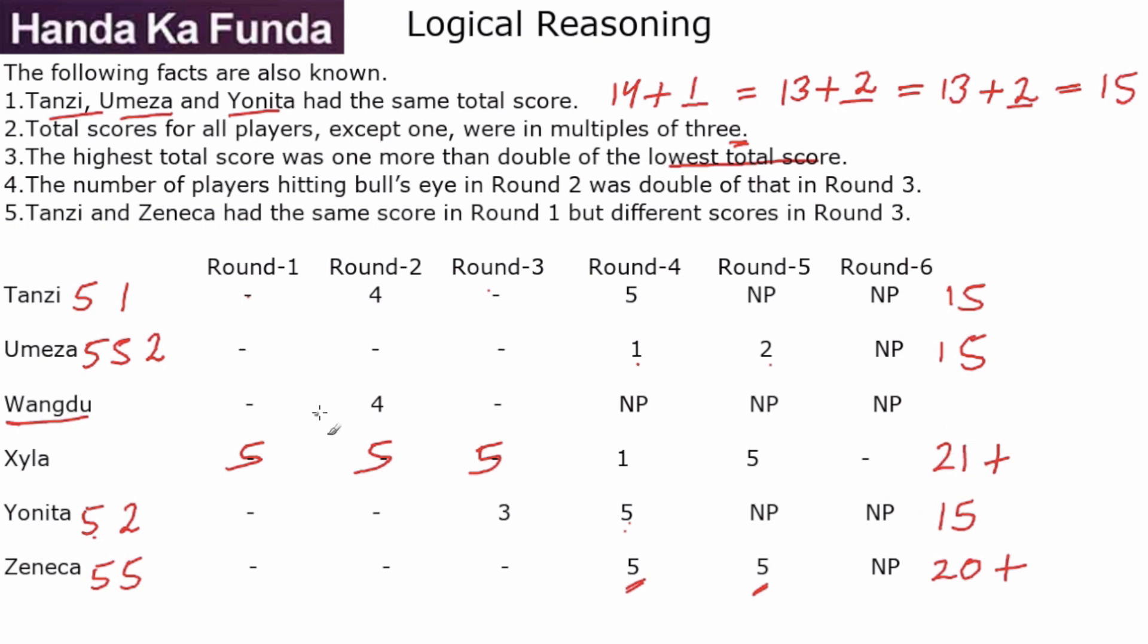So what can that be? All of them have to be a multiple of three. So let's say if I make Wangdu as 9, then the double would have been 18 plus 1 would have been 19. But that is not what is happening because we have people who are more than 20, which means that Wangdu's score, which has to be a multiple of three, it cannot be 9. Next possible option, suppose this is 12, then someone will need to be 25. So is that possible? Yes, 25 is possible.